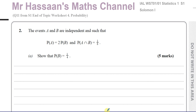This question is about events A and B which are independent. We're told that the probability of A is twice the probability of B, and the probability of A intersection B is 1/8. We need to show that the probability of B is equal to 1/4.